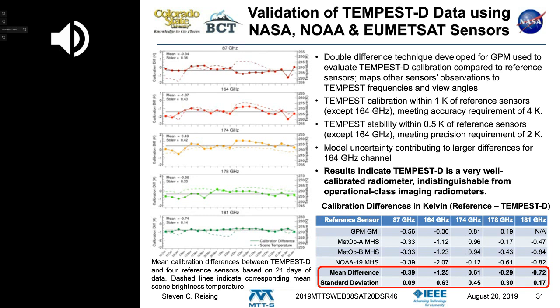NASA's Global Precipitation Measurement project has developed a technique for this — comparing radiative transfer results. We compute the expected brightness temperature assuming some known atmosphere, compare that predicted value with the observed value, and take the difference. We do this for each of two satellites being compared and then take their difference, removing most effects of radiative transfer model inaccuracies.